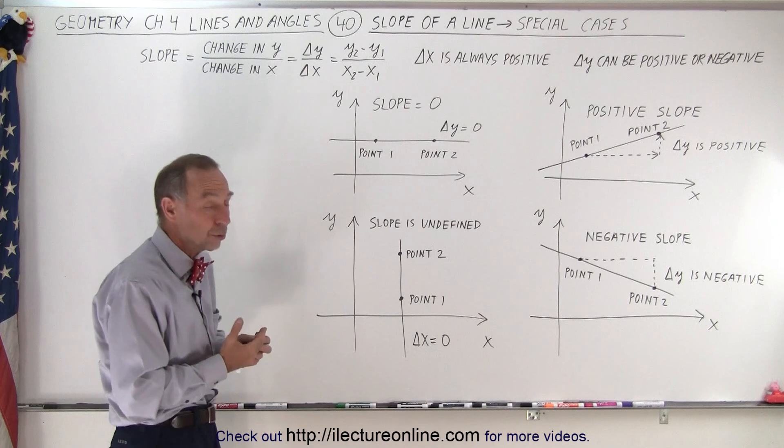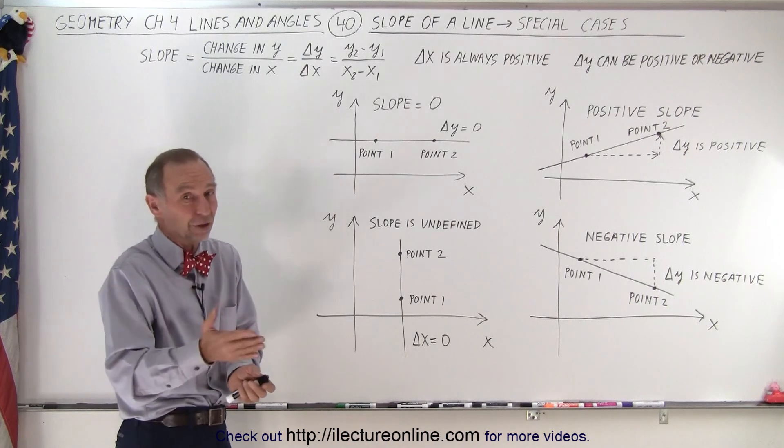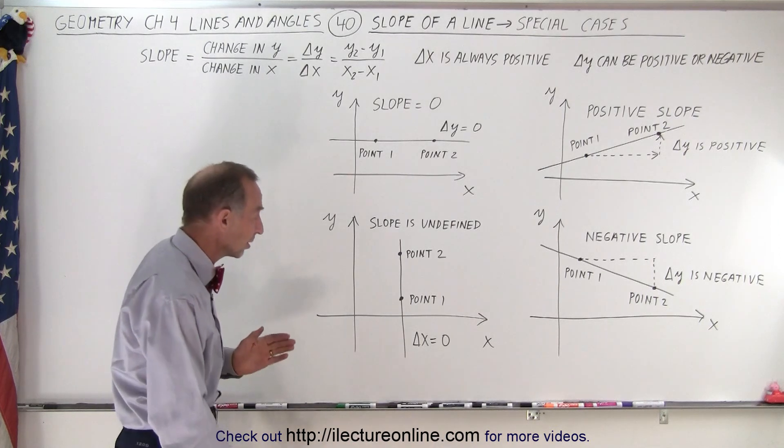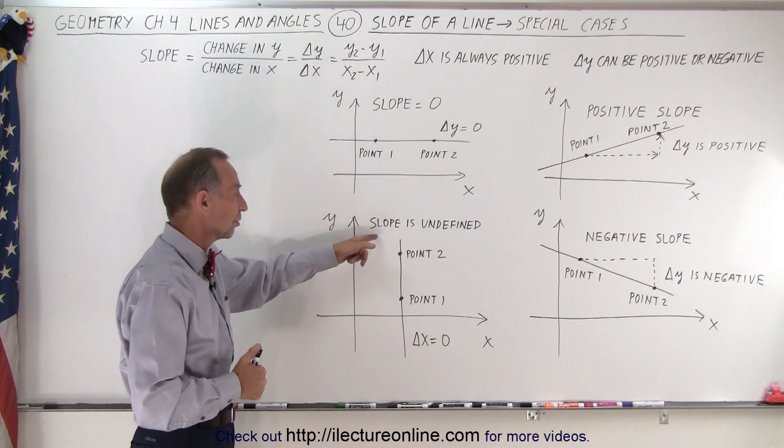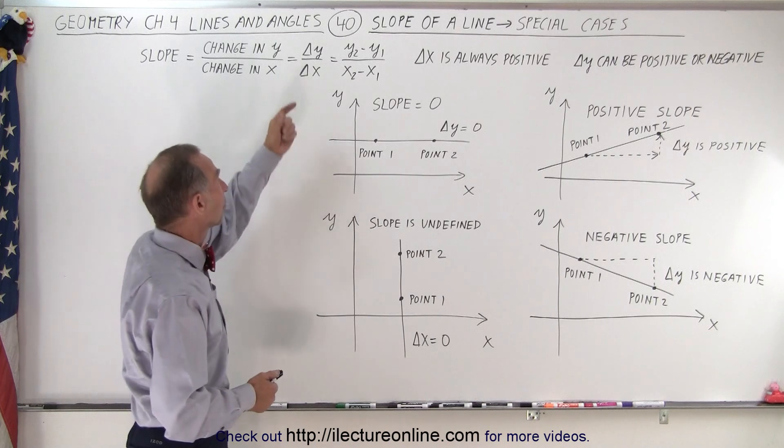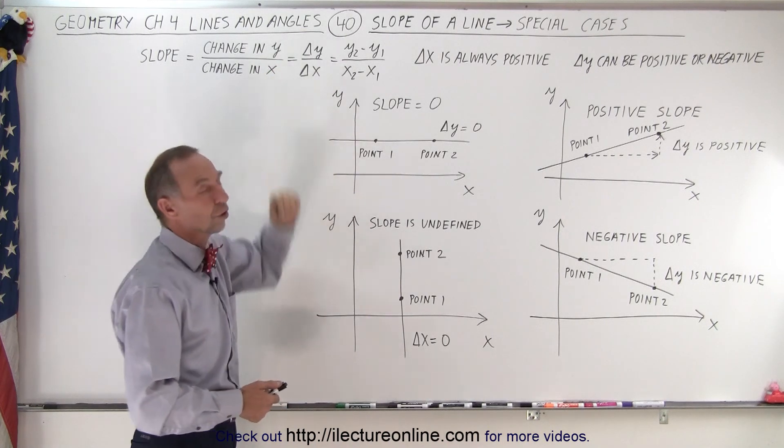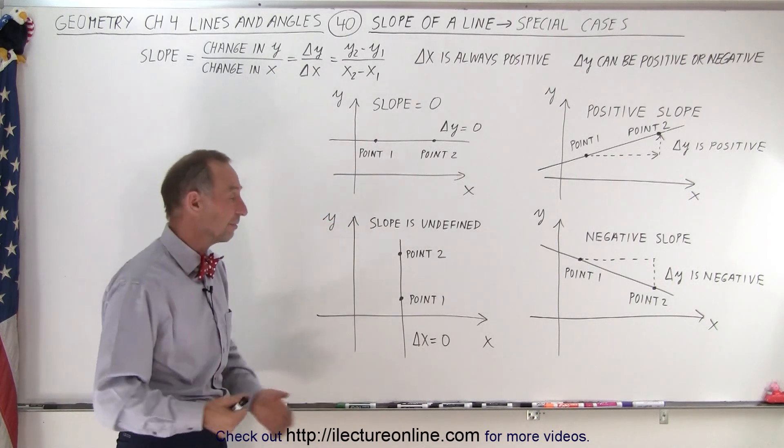So therefore, by that definition alone, the slope is also undefined because you cannot have a change in X if you have only a vertical line. But so we say the slope, therefore, is undefined. There may be a change in Y, but there's no change in X, so it's undefined.